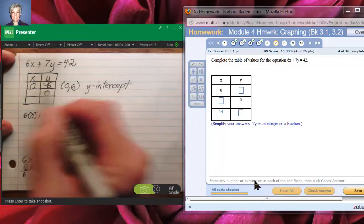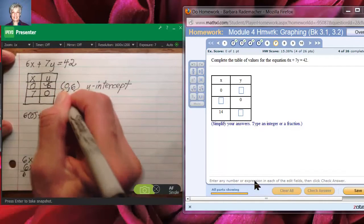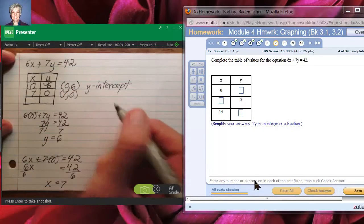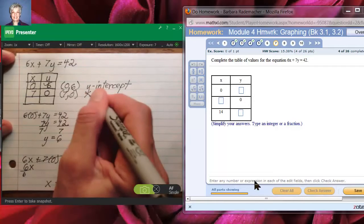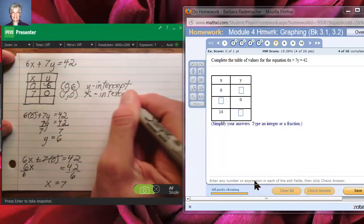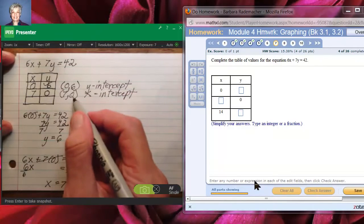So when y is 0, x is 7. The point 7, 0, with a 0 in the second position, is called the x-intercept. And this is the point at which the line crosses the x-axis.